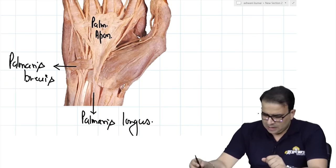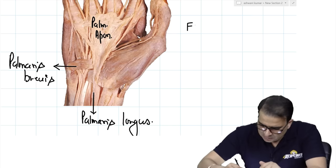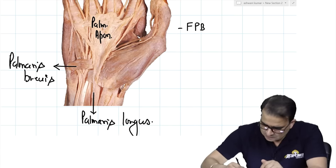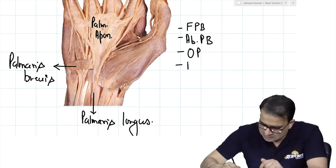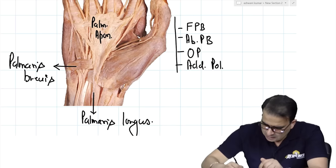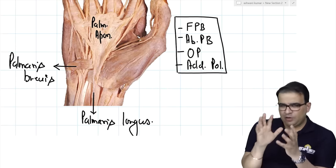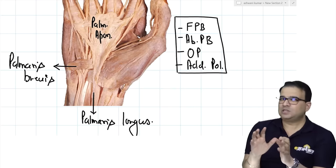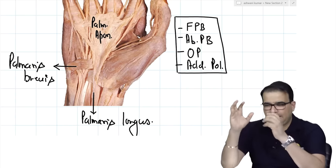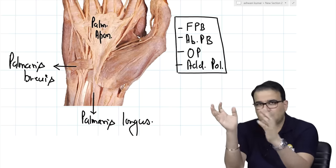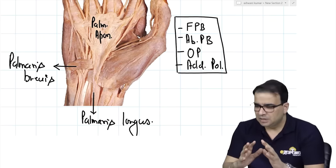The thenar muscles are: flexor pollicis brevis, abductor pollicis brevis, opponens pollicis, and adductor pollicis. In a superficial dissection, do not expect to see the opponens pollicis — it inserts to the metacarpal and is deeply placed. Similarly, adductor pollicis is not in the thenar eminence region. So in a superficial dissection of the palm, only two muscles of the thenar eminence are identifiable: abductor pollicis brevis and flexor pollicis brevis.